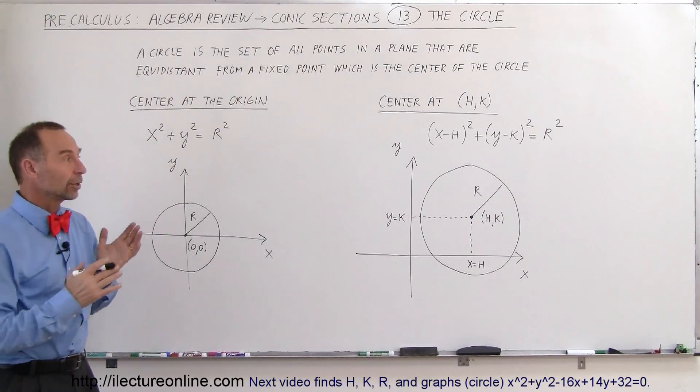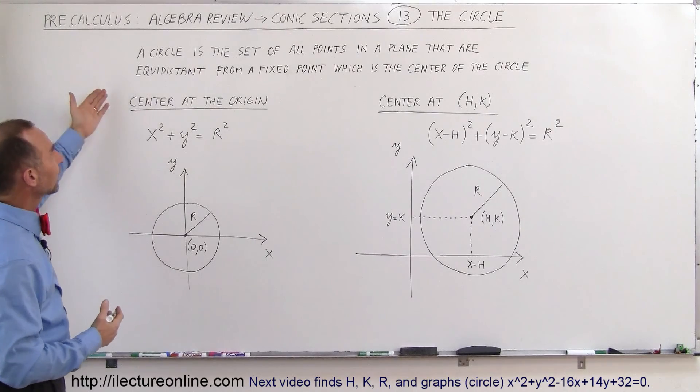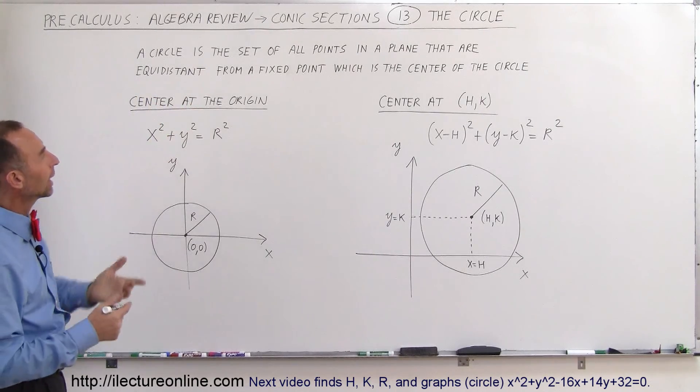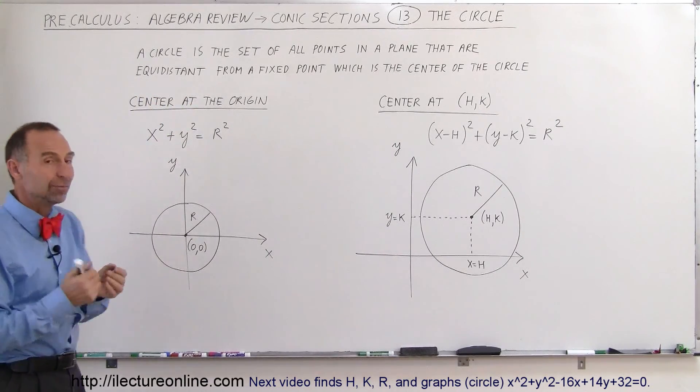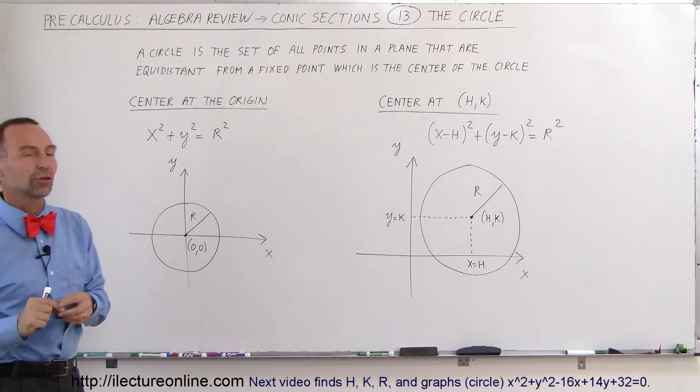Welcome to our lecture online. Now we're going to take a look at the circle in a general form. So what is a circle? The circle is a set of all the points in a plane that are equidistant, meaning the same distance from a fixed point, which is the center of the circle.